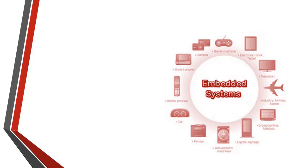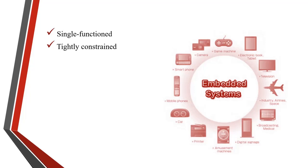Let's look into some characteristics of an embedded system. An embedded system is single-functioned, meaning it always performs a specified operation and repeats the same task. For example, a fire alarm always detects fire, a washing machine always washes and cannot detect fire. So it is always single-functioned.